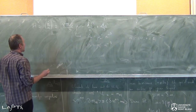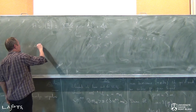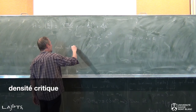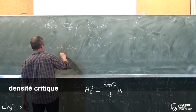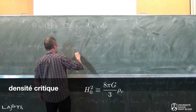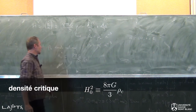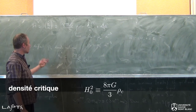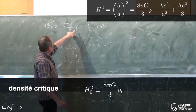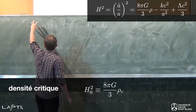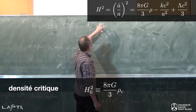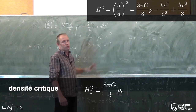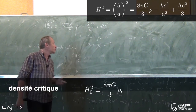Les notations sont les suivantes. On définit tout d'abord ce qu'on appelle une densité critique, que je vais appeler ρ_C. On la définit de la manière suivante : c'est une quantité telle que H₀² est égale à 8πG sur 3 fois ρ_C. H₀ ici, c'est la valeur actuelle de la constante de Hubble. Si on veut une interprétation physique, c'est la densité qu'il faudrait mettre ici pour qu'aujourd'hui, avec H égale H₀, on ait k égale à 0 et lambda égale à 0.